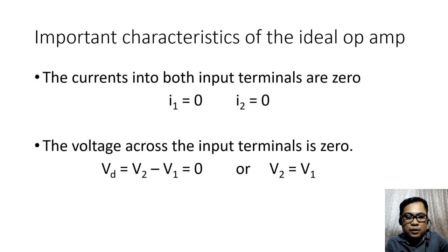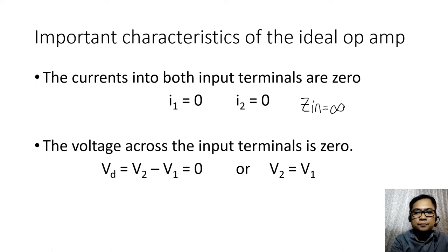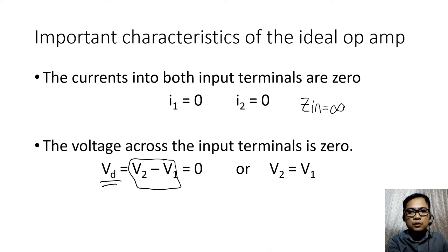Next we have the parameters in ideal op amp. We have our input currents equated as zero. This is because our z input is equivalent to infinite ohms, so with this our input current is going to be zero amperes. Then we have our differential voltage equivalent to the difference or the subtraction between v2 and v1 is equivalent to zero. If you transpose that to the other side of the equation, that equates to v2 is equal to v1.